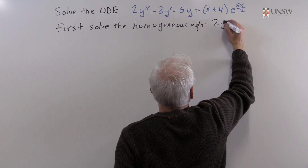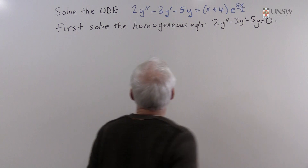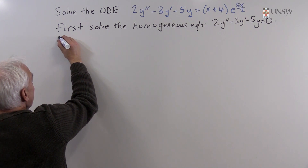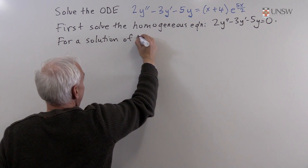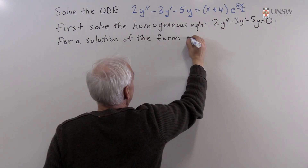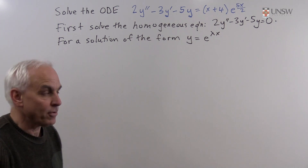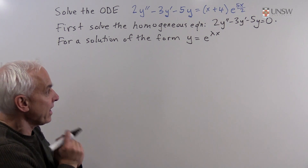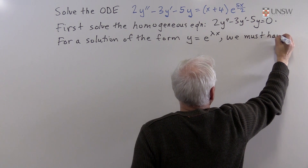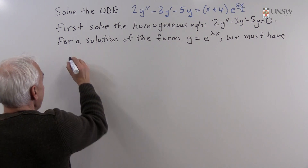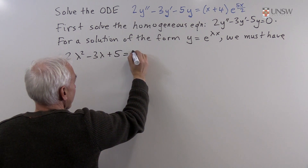So that's 2y'' - 3y' - 5y = 0. We look for a solution of the form y = e to the lambda x — an exponential. For such a solution, lambda must satisfy the characteristic equation: 2λ² - 3λ - 5 = 0.